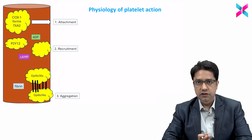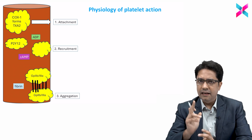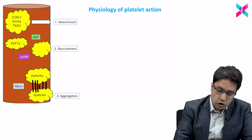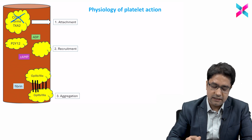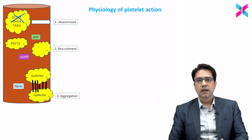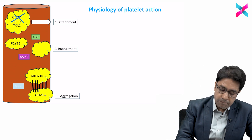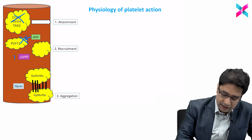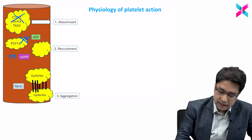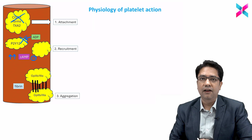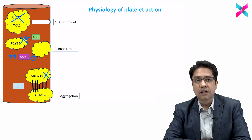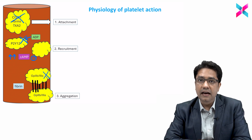Now that we've discussed platelet physiology, we can block this process with antiplatelet drugs. The first approach: inhibit the COX-1 enzyme so thromboxane A2 is not produced, inhibiting platelet attachment. We can also block the P2Y12 receptor of ADP to inhibit recruitment, or increase the level of cyclic AMP — since higher cyclic AMP inhibits recruitment. Lastly, a drug that blocks the GP2B3A receptor will inhibit platelet aggregation.